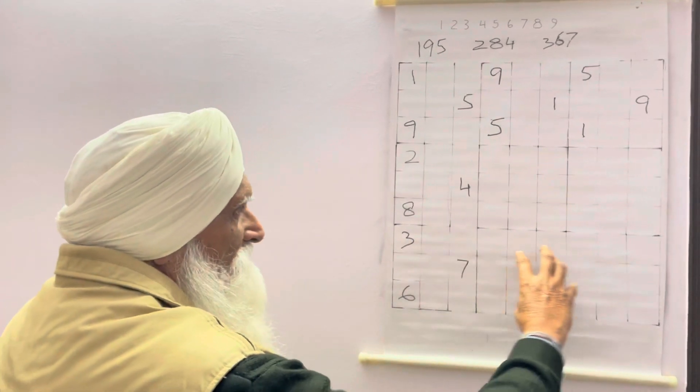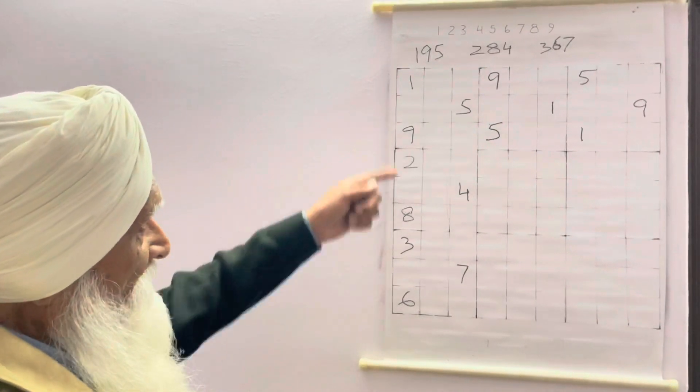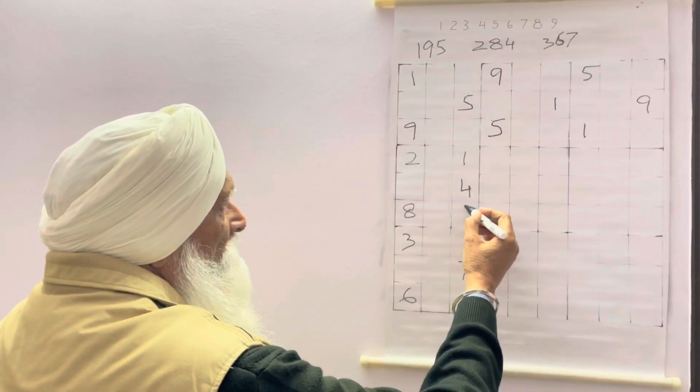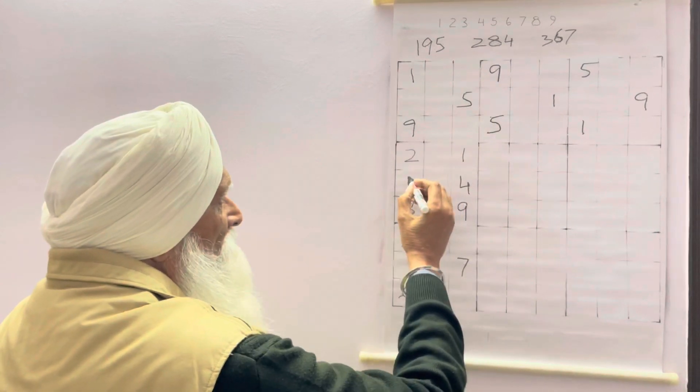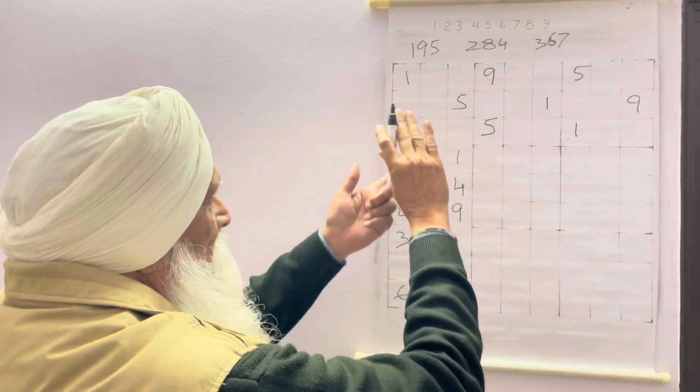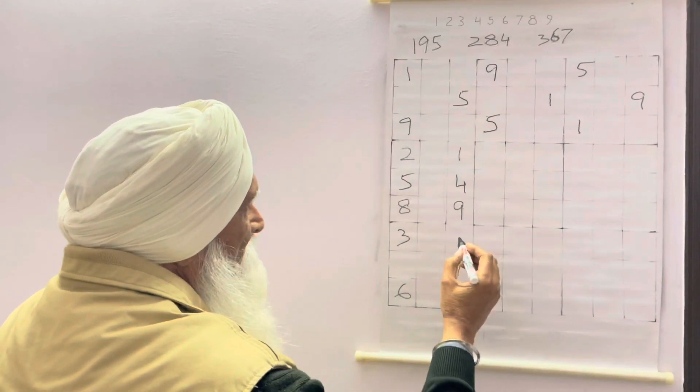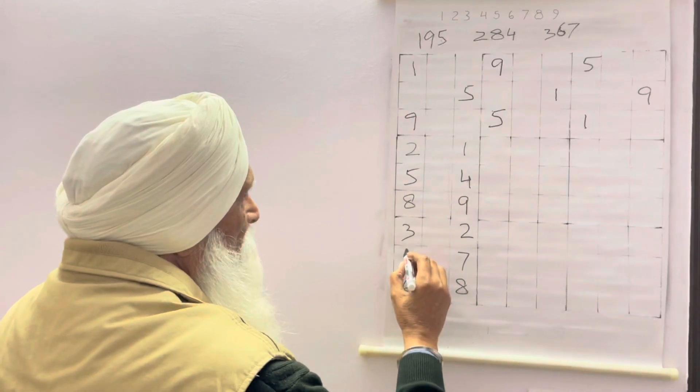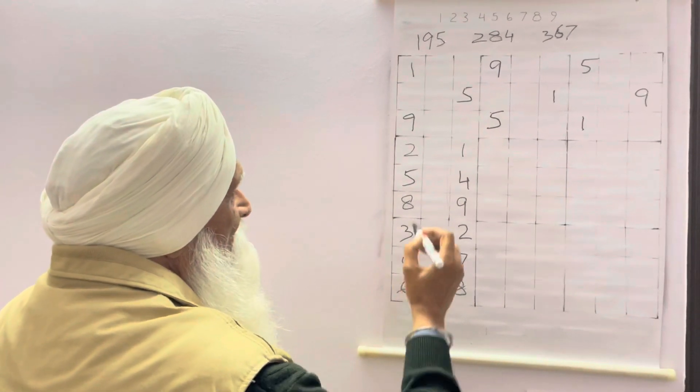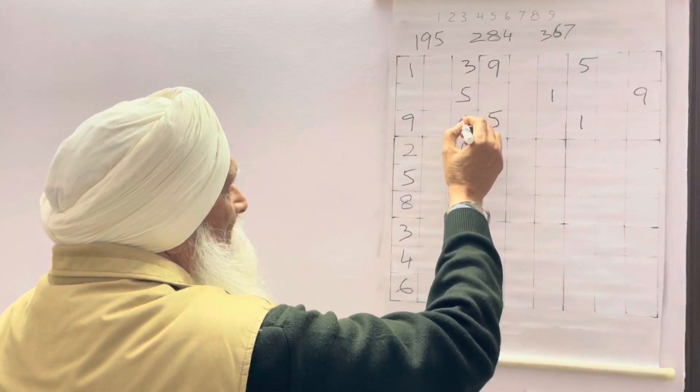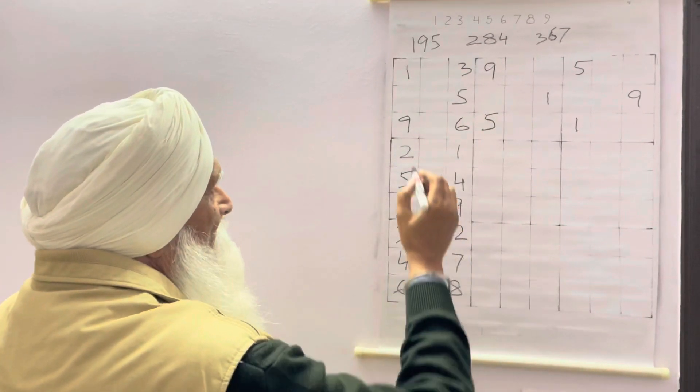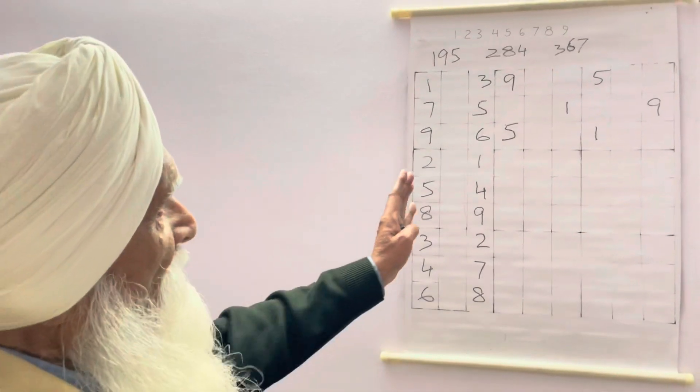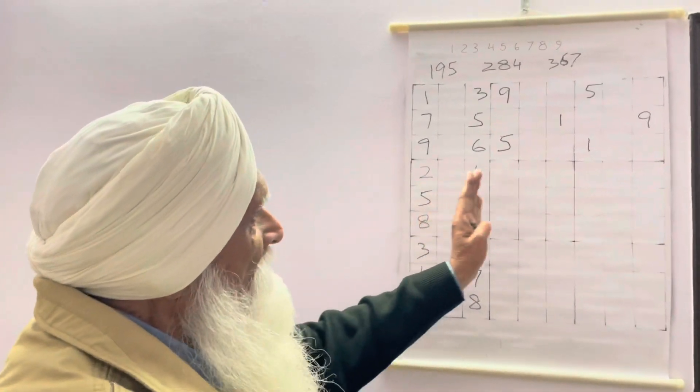Same exercise shall be repeated for this block and same exercise shall be repeated for these blocks. Next is we will bring down these two numbers into this block: 1, 9, and 5 will come here, we will flip it over. Next we will bring these numbers: 2, 8, and 4, and 3, 6 will go up: 3, 6, and 7.